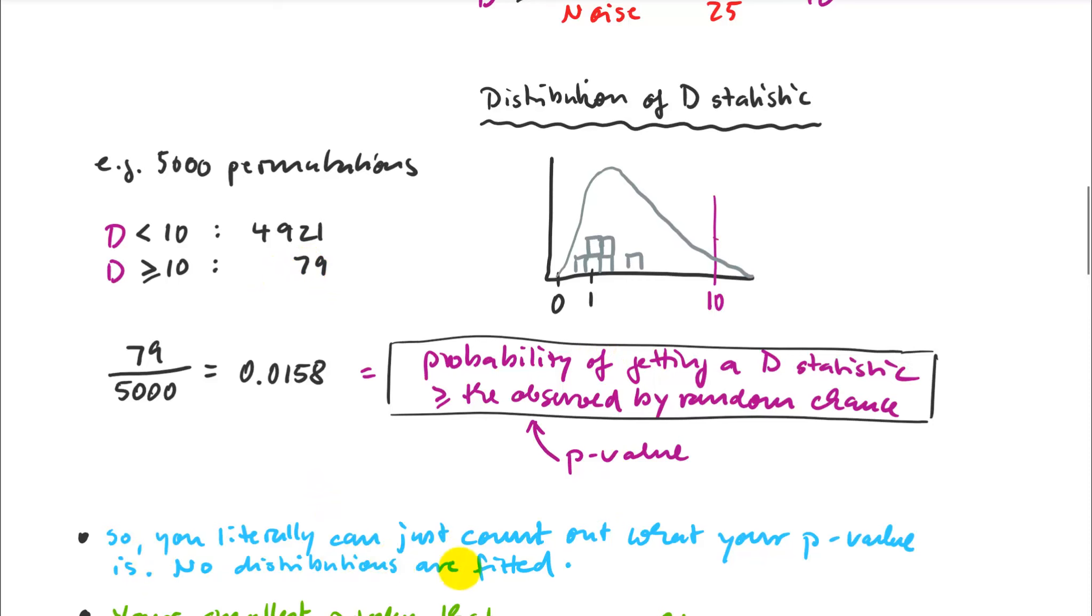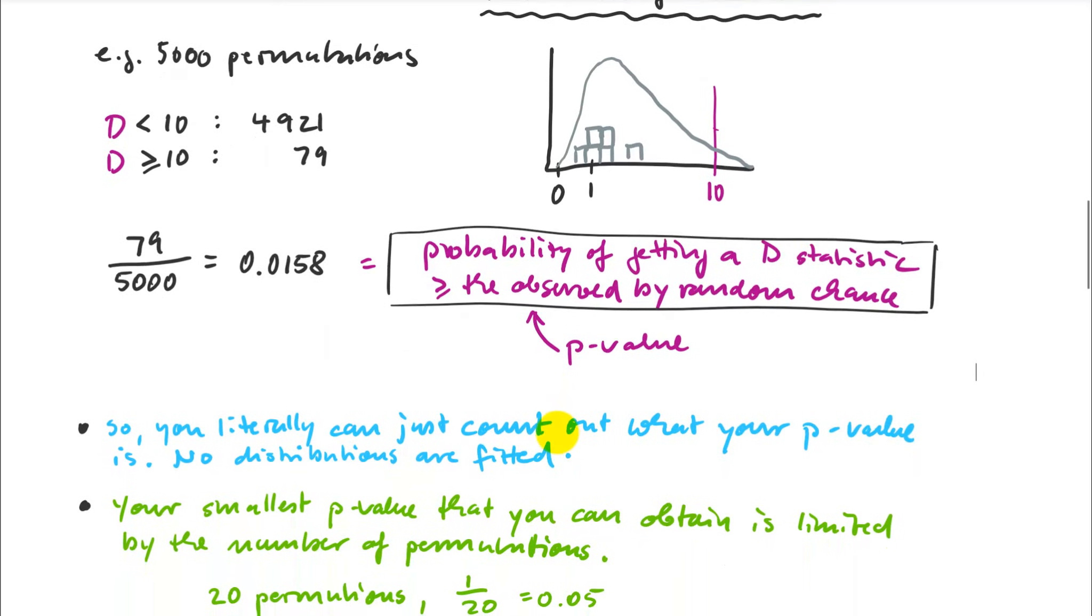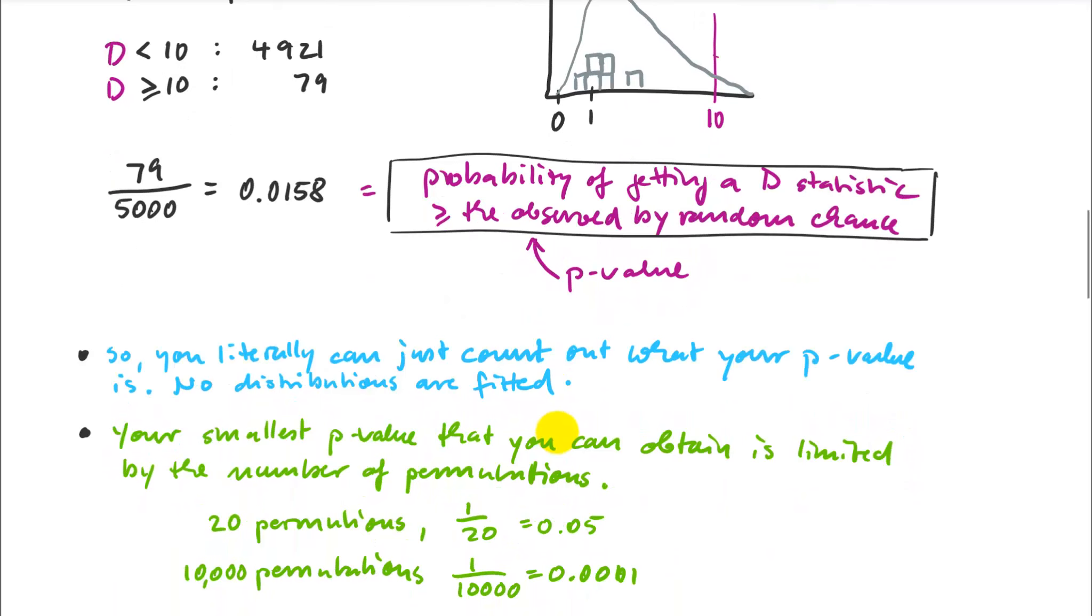Remember, each time I generated those, this was just a random permutation. That's very cool - I can literally count out what the p-value is. There's no distributions to be fitted, but it works just as well as the analysis of variance or MANOVA approach. That ratio of variances under the assumption of normality gives you almost exactly the same p-value every single time.